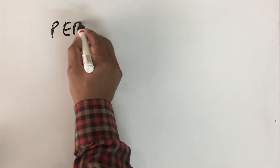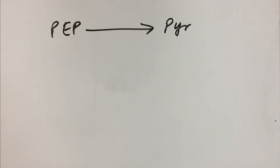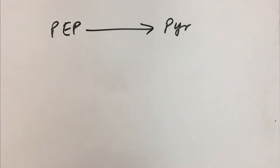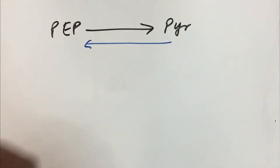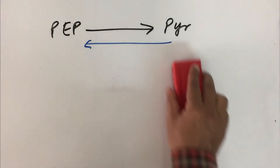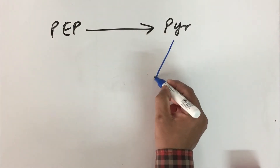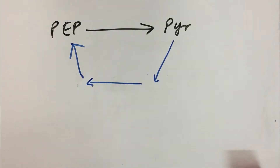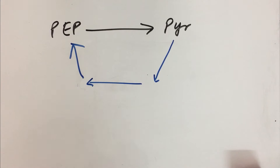Now let us deal with the bypass reactions or the unique reactions of gluconeogenesis. We will begin from the last stage of glycolysis, so we are trying to reverse it. The last step of glycolysis was PEP was converted to pyruvate. In the introductory sessions on metabolism, we have seen that if you want to reverse a pathway, normally in metabolism, it will always take a different route. Pay attention to that — it will take a different route in order to reverse a particular step, and you will see here one such example.